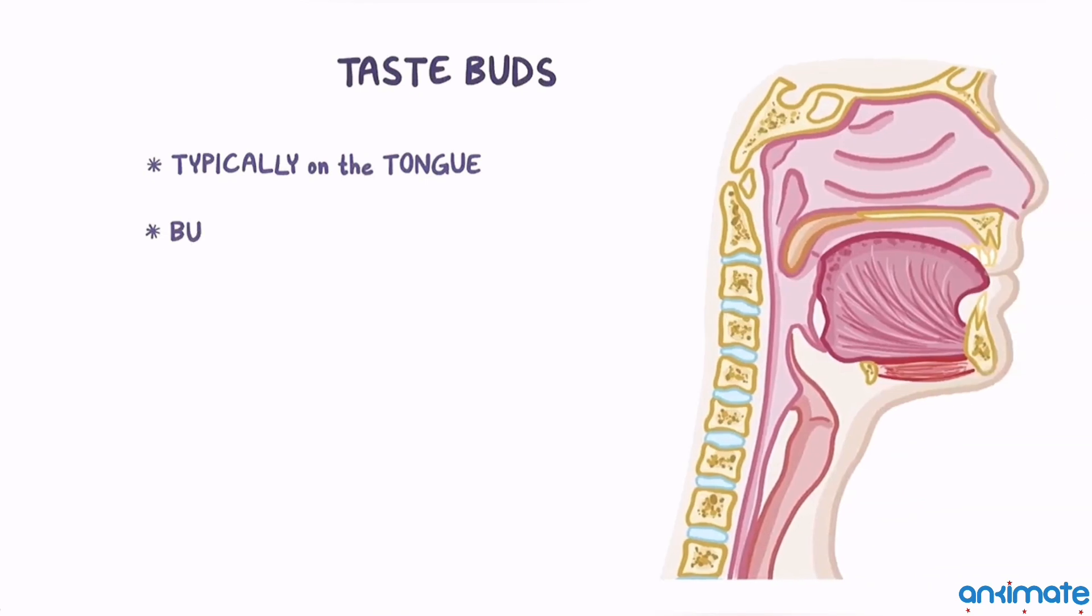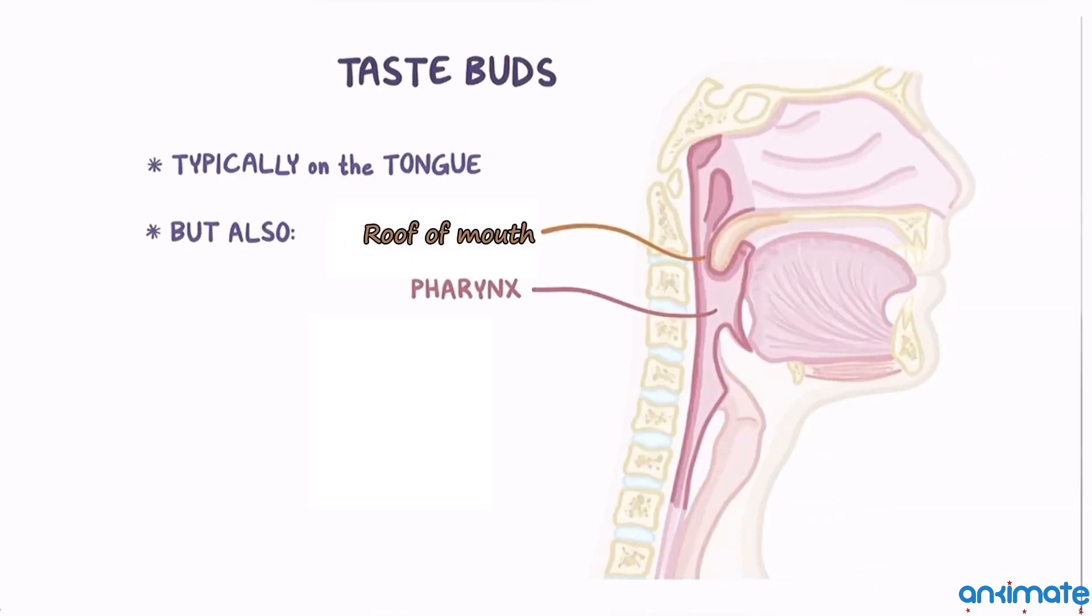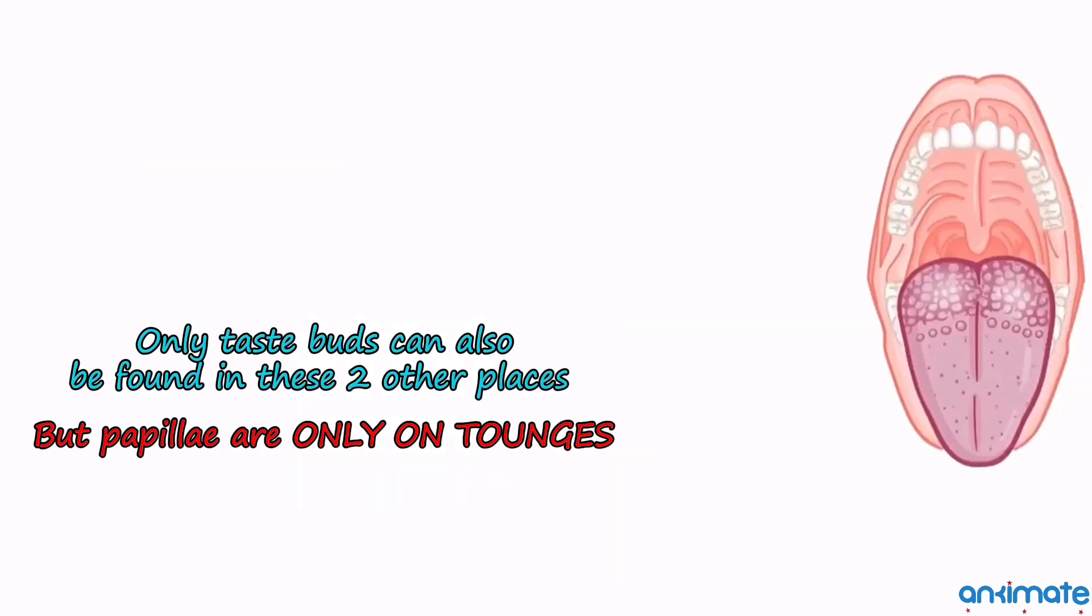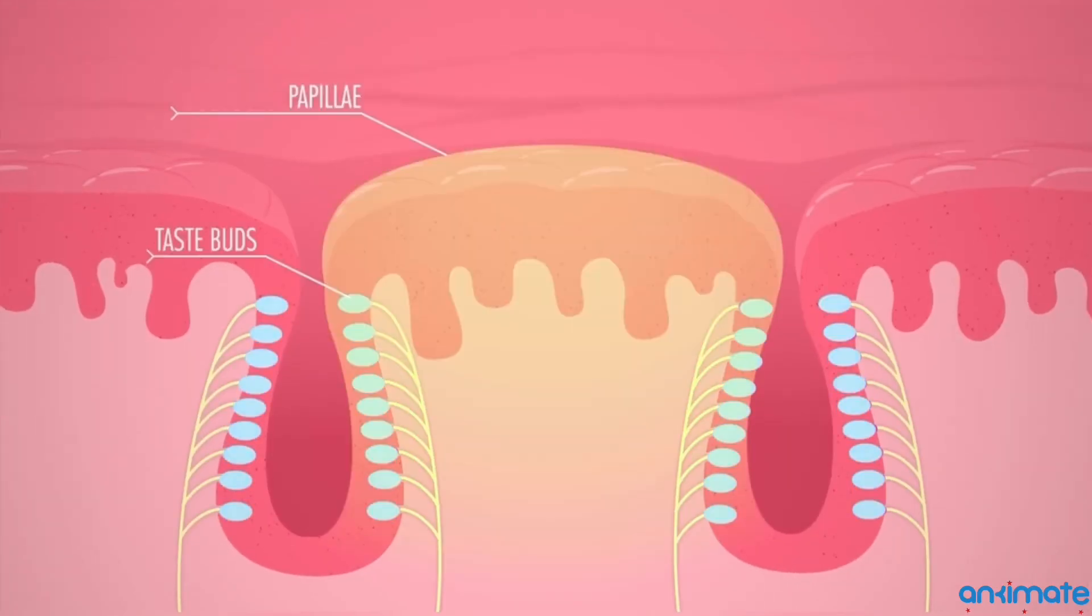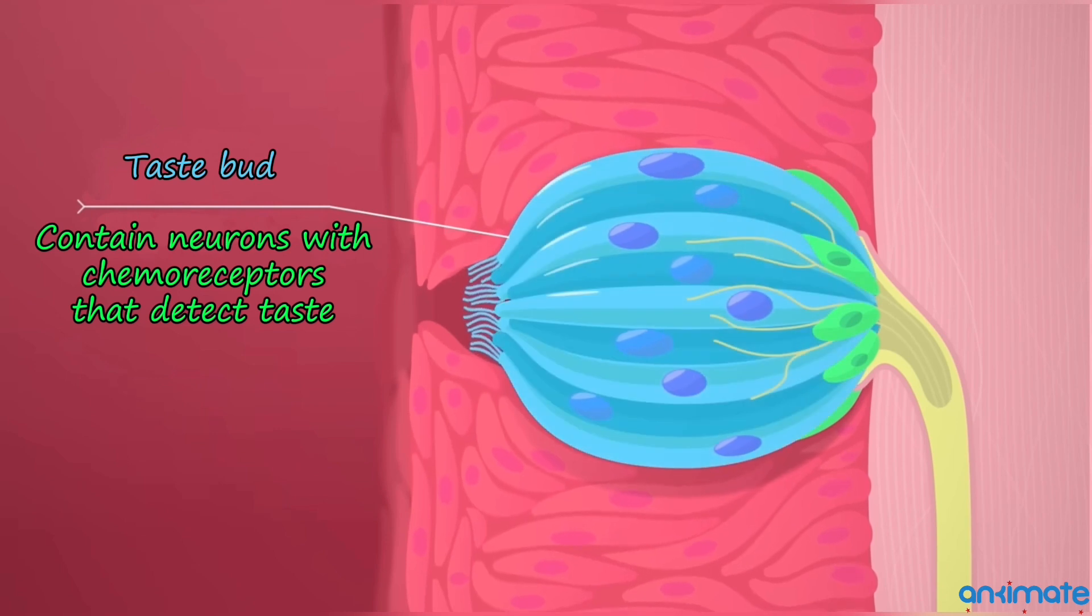Taste buds are typically on the tongue between the papillae, but they can also be found on the roof of the mouth and in the pharynx or throat. The papillae are only found on the tongue. In between the papillae, we have the taste buds with taste receptor cells.